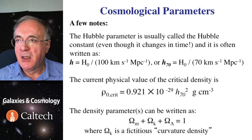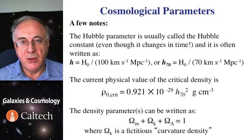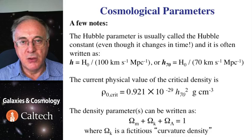So, let's have a few notes here. Hubble parameter is often or always called Hubble constant, and it's sometimes written in the following normalized form. We divide actual value of Hubble constant, which is usually expressed in kilometers per second per megaparsec, by 100.